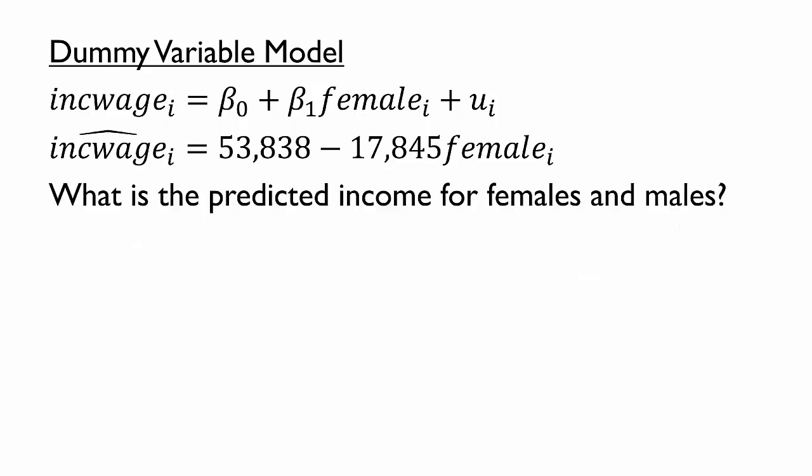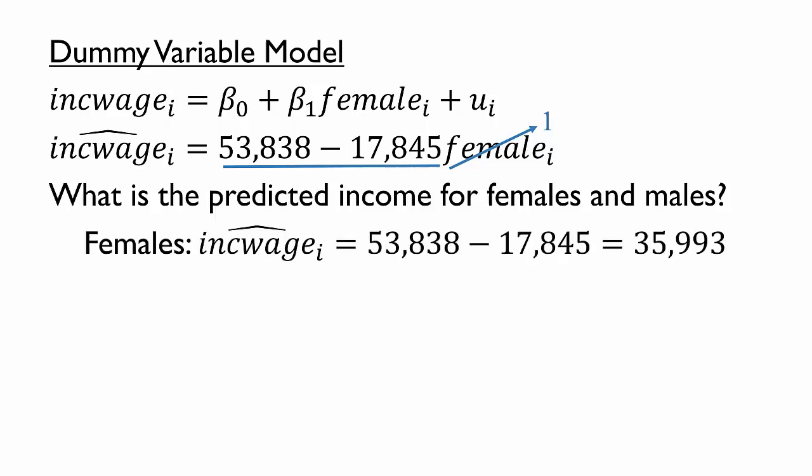Fortunately, we can make predictions in a dummy variable model the same way that we can in any other regression model. For example, if we wanted to predict the income for a female, we would need the estimated coefficients from the model, and we'd also need to plug in an appropriate value for the independent variable. If we're making a prediction for a female, then the value of the female variable is 1. So the predicted income for females is 53,838 minus 17,845, which is 35,993.